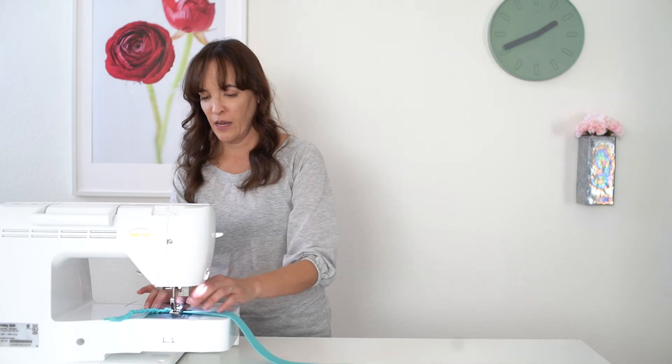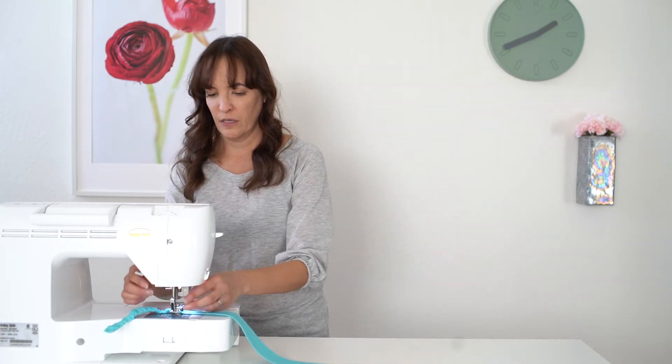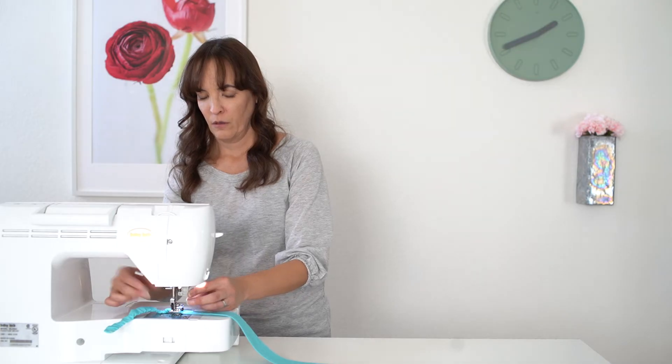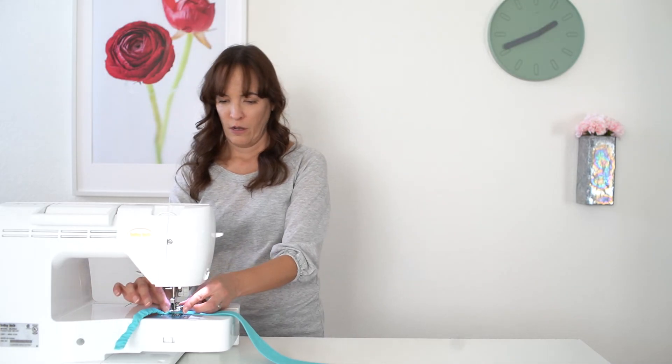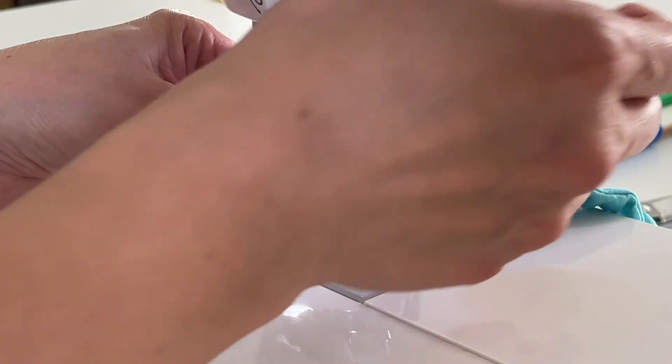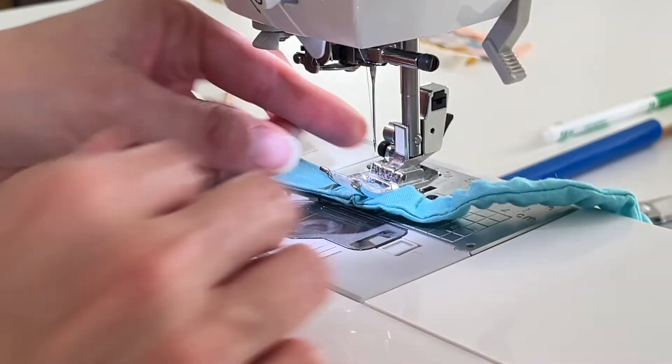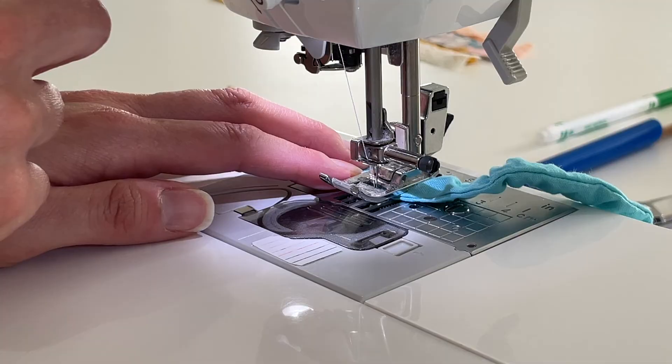And if you have a self-leveling foot, this is usually a good place to use it. If you don't know what that is, or if you have one, if your presser foot has this button on the side, you have one. And I've linked another video below on how to use that. And I like to backstitch across this as well.